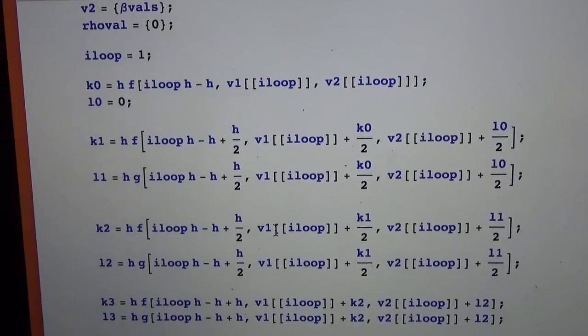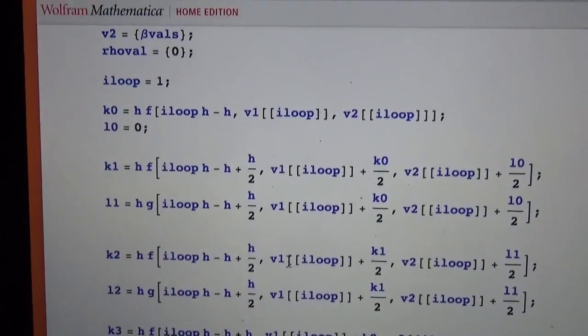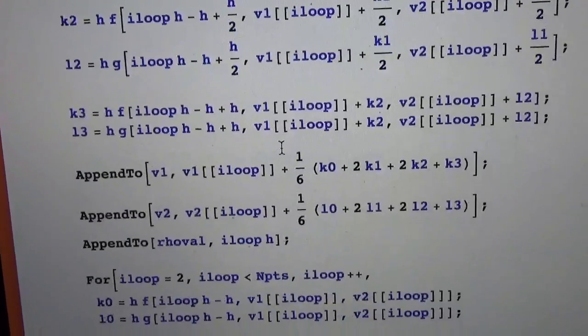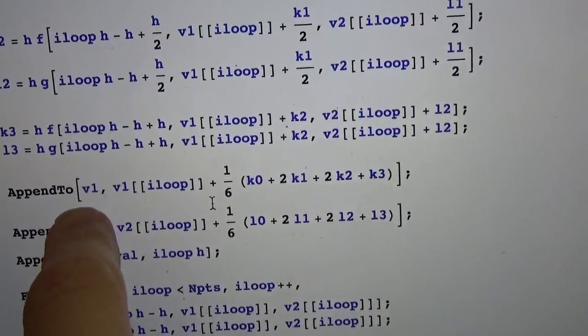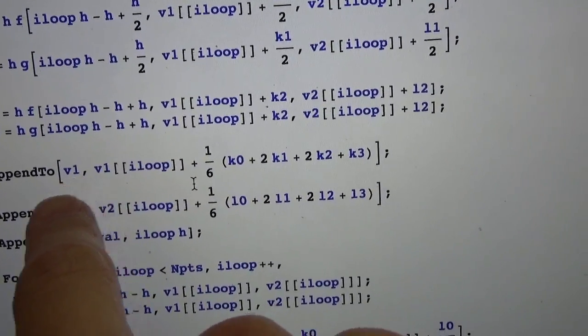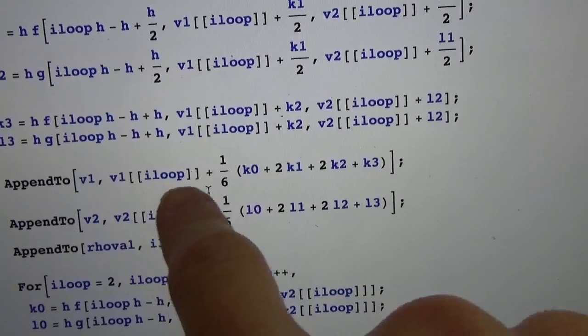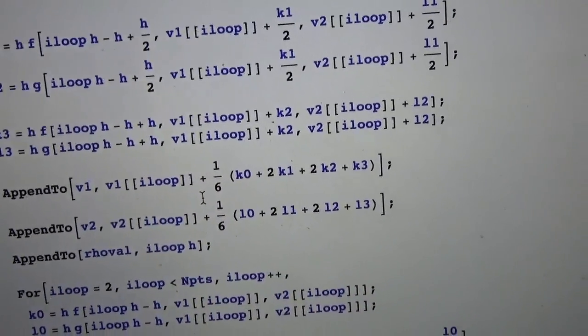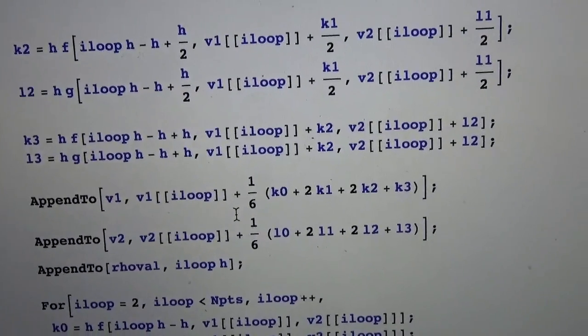After you have defined the coefficients for the fourth order Runge-Kutta, the next thing to do is to update your values for V1 and V2 using the coefficients. It's the average of the coefficients.